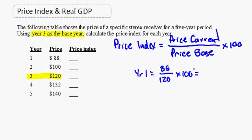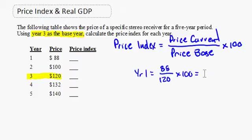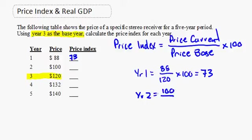This equals 73, so in year one we have a price index of 73. Now for year two, the price index equals 100, which is the current price, divided by the base price of 120, multiplied by 100.